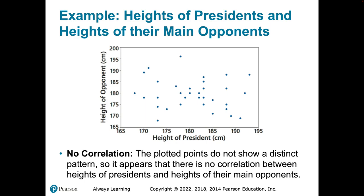For example, heights of presidents and heights of their main opponents — I see no correlation here. There's no distinct pattern of positive or negative relationship, so this would be described as no correlation. With a scatter plot that exhibits no correlation, the line we eyeball — which we call the line of best fit — is just a horizontal line.